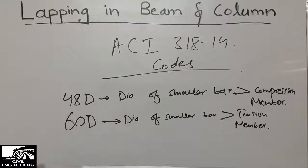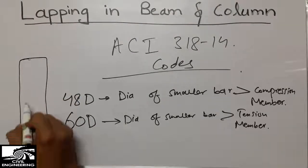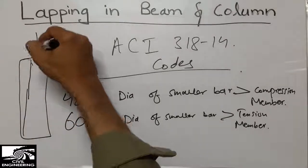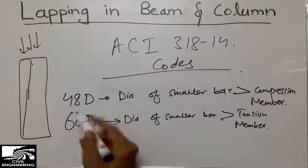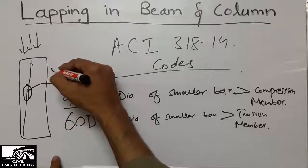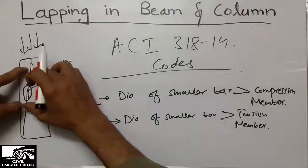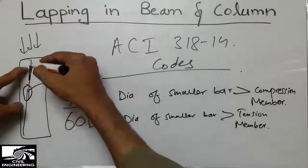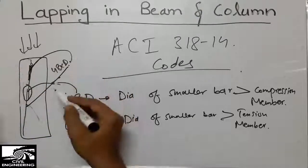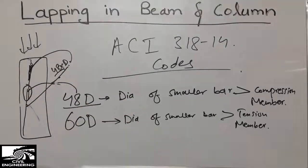For example, in a column — which is a compression member because load acts on it in compression — we use 48d. We overlap one bar with another bar in the column. The d value is the diameter of the smaller of the two overlapping bars. We identify which bar is smaller and multiply that diameter by 48 to get the lapping length.